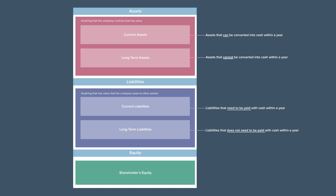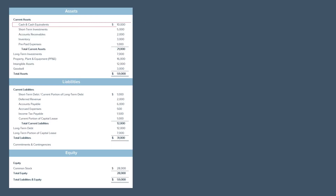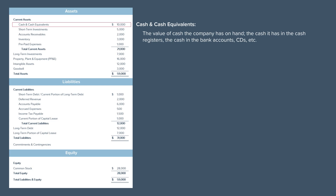Now that we understand how the balance sheet is structured, let's go down the list and learn about the major line items that appear on the balance sheet. The first line on the balance sheet is usually cash and cash equivalents. This is the value of the cash the company has on hand, the cash it has in the cash registers, the cash in the bank accounts, CDs, etc. Recall that line items in the assets section are ordered based on liquidity, and nothing is more liquid than cash, which is why cash and cash equivalents is usually the first line on the balance sheet.